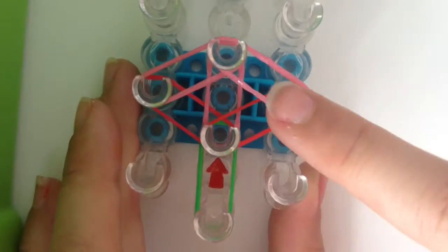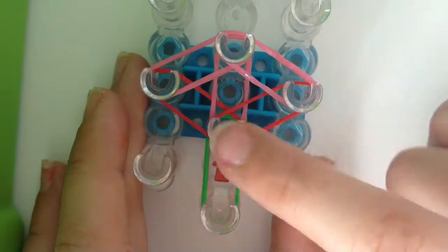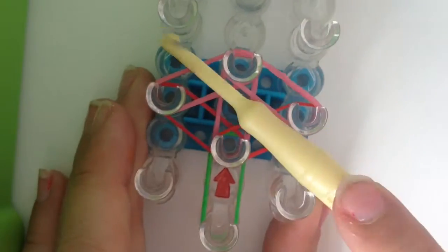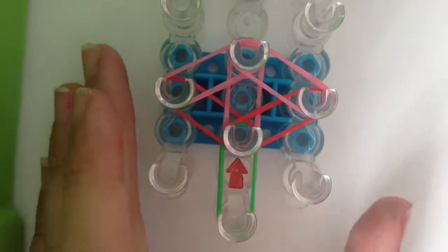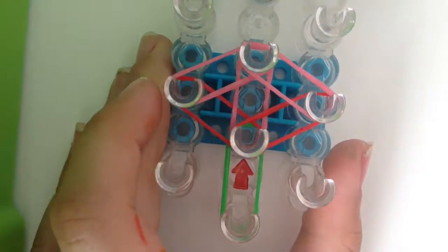As you can see you will create a diamond shape with a little stem coming off. Make sure you push all your bands down. You can either use your fingers like this or use your hook.